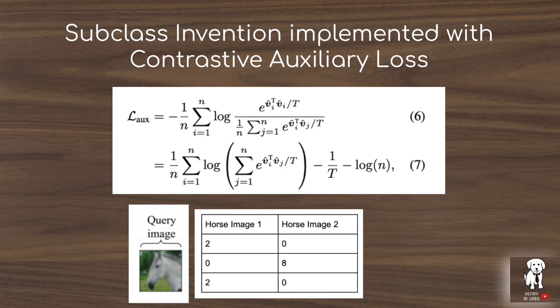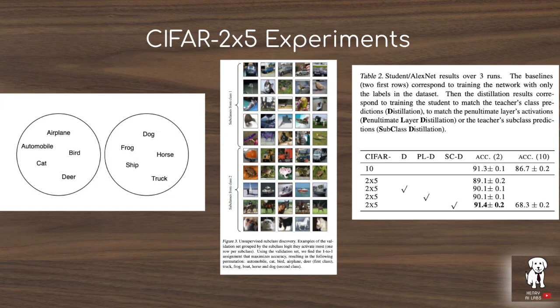The authors demonstrate subclass distillation by artificially compressing CIFAR-10 into CIFAR-2x5 and showing that subclass distillation can recover the original classes. They further experiment with this on Celeb-A, Click Prediction, and MNIST.